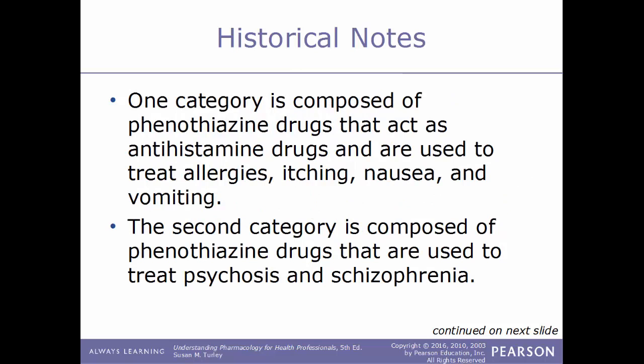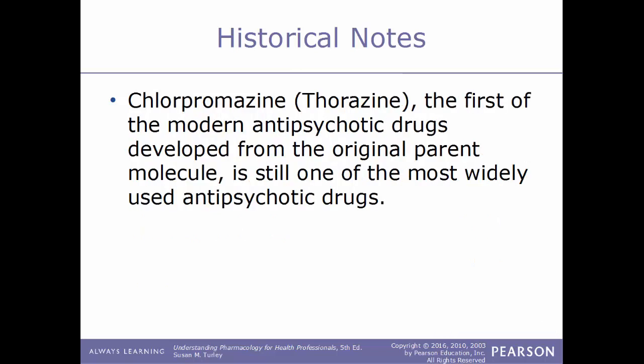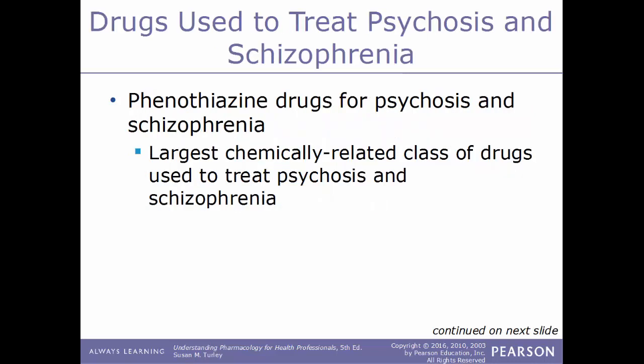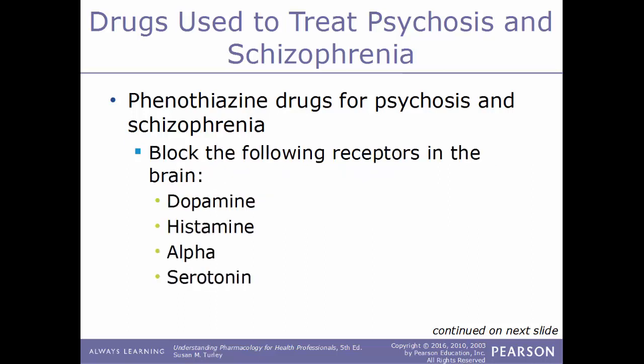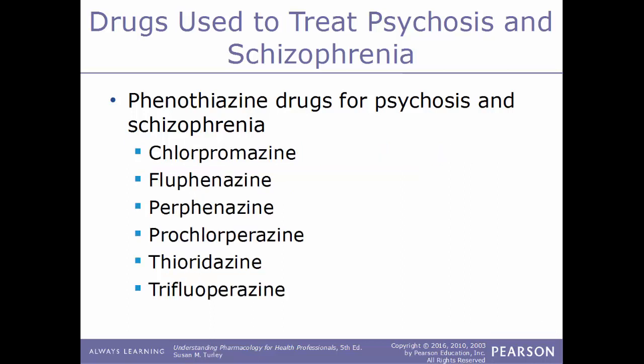One category of phenothiazine drugs acts as antihistamines, used to treat allergies, itching, nausea, and vomiting. The second category is used to treat psychosis and schizophrenia. Chlorpromazine (Thorazine), the first modern antipsychotic developed from the original parent molecule, is still one of the most widely used antipsychotics. Phenothiazines are the largest chemically related class of drugs used to treat psychosis and schizophrenia, acting by blocking dopamine, histamine, alpha, and serotonin receptors in the brain.